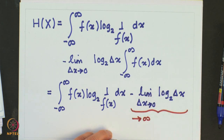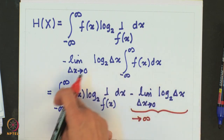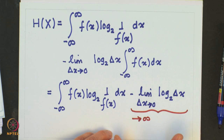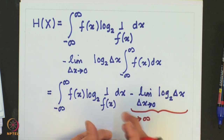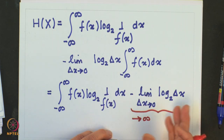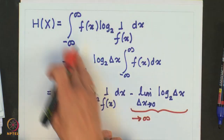This divergence is intuitively expected: when delta-x tends to 0 there are infinitely many values in any range, so the uncertainty of getting a particular value becomes infinite — the probability of any specific value is essentially 0. Therefore, from this point of view, the uncertainty and the entropy become infinite for a continuous source. Since I cannot define this infinite quantity directly, we need to address this problem.